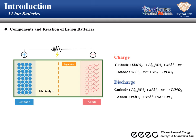Lithium-ion batteries consist of four main components. First, cathode — cathode determines the performance of the lithium-ion batteries. Second is anode — anode stores lithium ions. Third is separator — separator is for separating the anode and cathode physically and passing lithium ions between those. The final component is electrolyte — electrolyte provides the pathway for lithium ions. In the charge-discharge process, it is operating by the redox reaction, such as the light fuel formula.